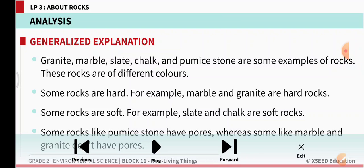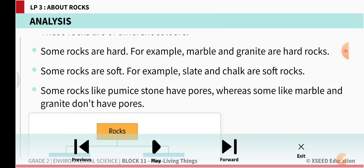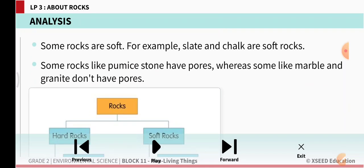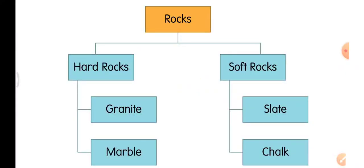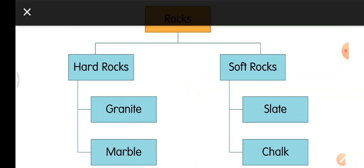Granite, marble, slate, chalk, and pumice stone are some examples of rocks. These rocks are of different colors. Some rocks are hard, for example marble and granite are hard rocks. Some rocks are soft, for example slate and chalk are soft rocks. Some rocks like pumice stone have pores, whereas some like marble and granite don't have pores. So rocks can be divided into two: hard rocks and soft rocks. In hard rocks we have granite and marble, in soft rocks we have slate and chalk.